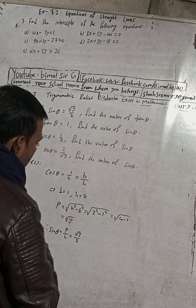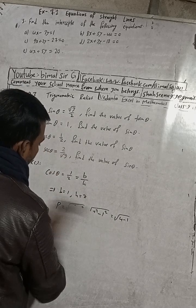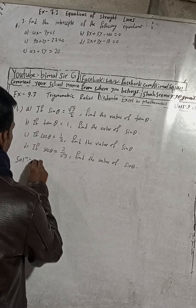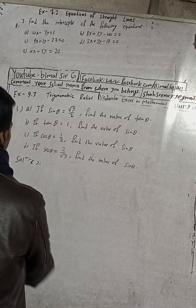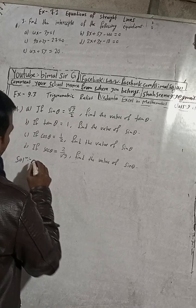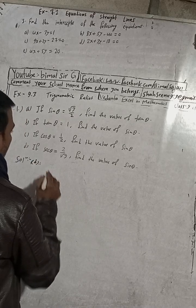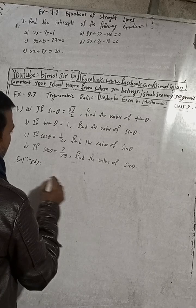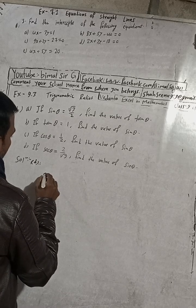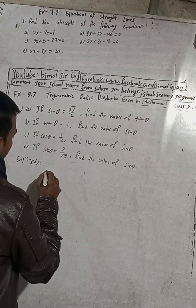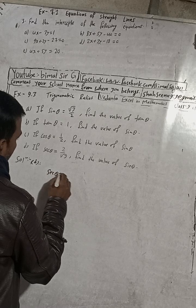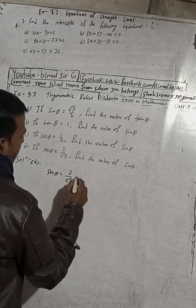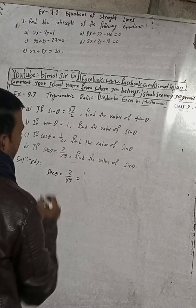Now part D. If sec θ is equal to 2 by √3, find the value of sin θ. So given sec θ equals 2 by √3, this is the sec θ formula. We know sec is the reciprocal of cos θ.